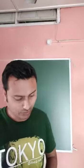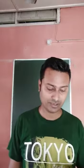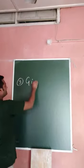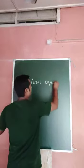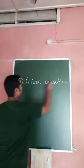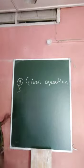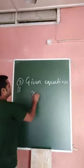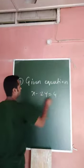Come to question number 3. Question number 3 is: check which of the following are solutions of the equation x minus 2y equal to 4, and which are not. In this case, solutions are given to us. We have to check whether those solutions satisfy the given equation or not.